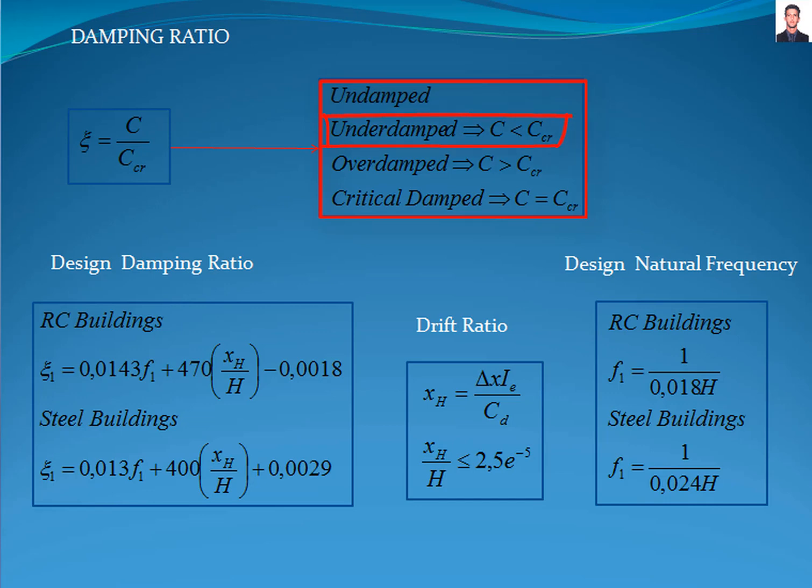Underdamped: where the damping coefficient is less than the critical damping. Overdamped: when the damping coefficient is greater than the critical damping. And critical damped: where C equals CCR.